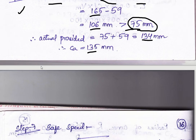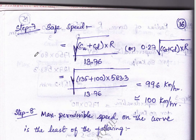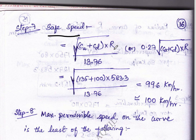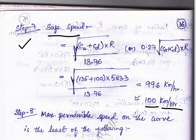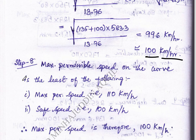Step six is completed. Step seven: calculate safety speed using the formula — root of (CA + CD) × R / 13.76, where CA is actual cant and CD is cant deficiency. Using this formula, we get a safety speed of 99.6 km/h, which can be taken as 100 km/h.